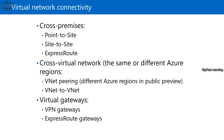Continuing from there, we talked about Azure network components. Similarly, we have virtual network connectivity options — the options available to connect with the Azure network. We have cross-premises options available: point-to-site, site-to-site, and ExpressRoute.